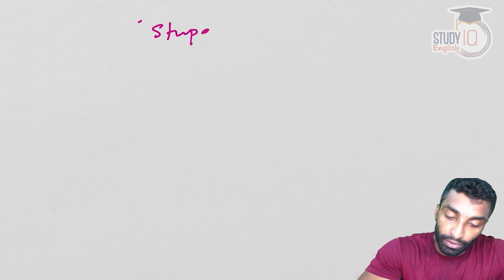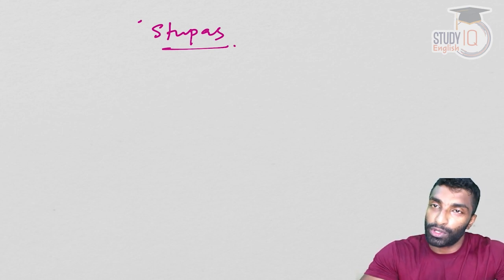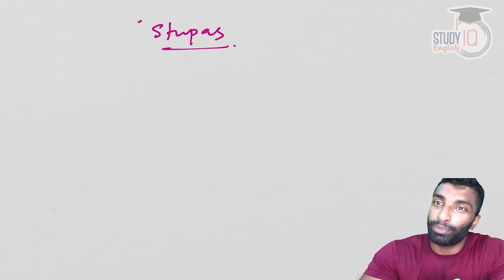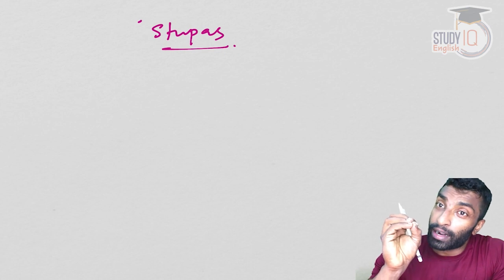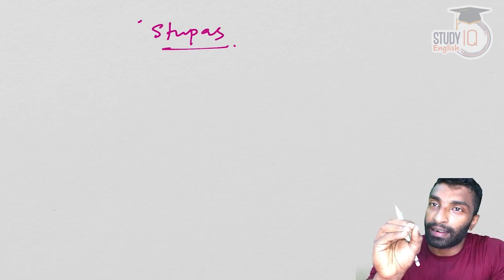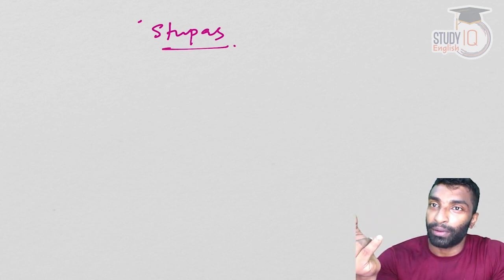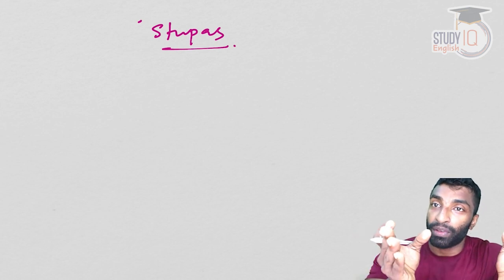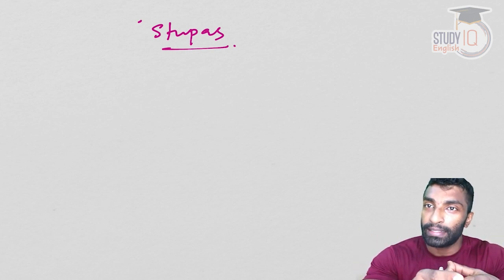Today we will be talking about the Stupas. What are Stupas? Stupas are actually the places where the relics of Buddha were kept — the remains of Buddha were kept. After the death of Buddha, his remains were placed and a structure was built upon that. There are some with the original relics or remains of Buddha, and there are many more which are symbolic. Stupas are the places where the remains or the relics of Buddha were kept, and it is also the worship place of Buddhism.